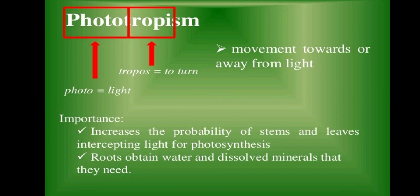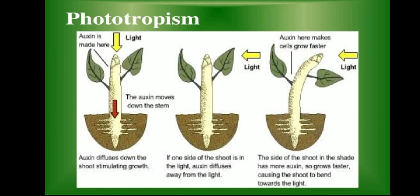Let me explain phototropism first. Photo means light, trophos means to turn. The movement of a plant towards or away from light is called phototropism. The tip part of the plant — the auxin — is moving towards the light, indicating positive phototropism. The shoot part of the plant normally moves towards the sunlight — this is positive phototropism. The root moves in the opposite direction, towards the soil in search of water — this indicates negative phototropism.